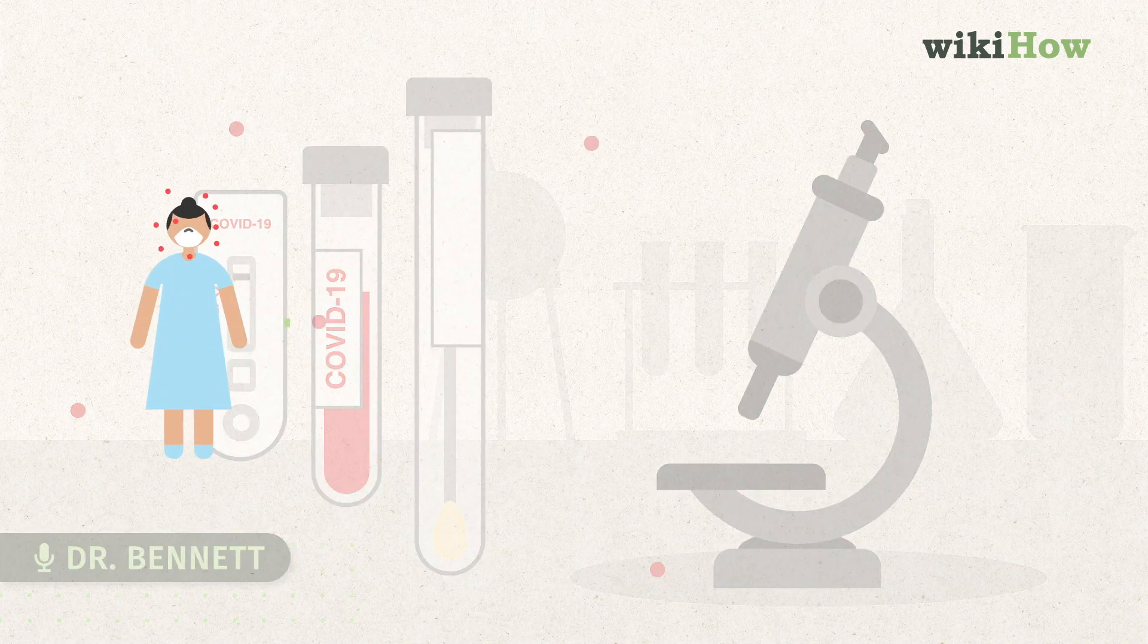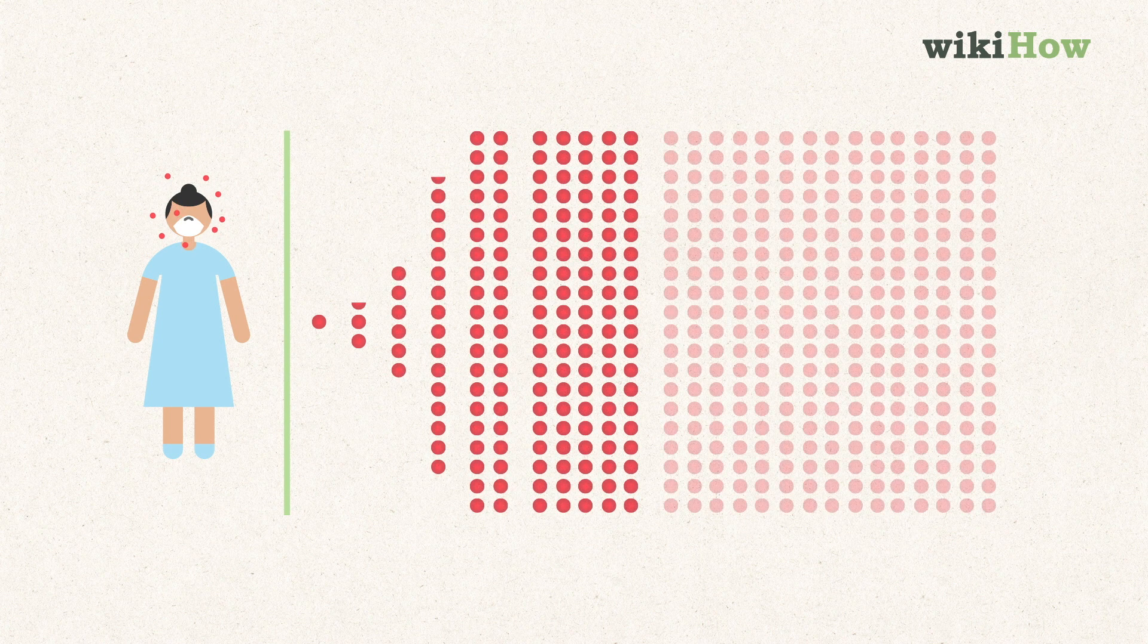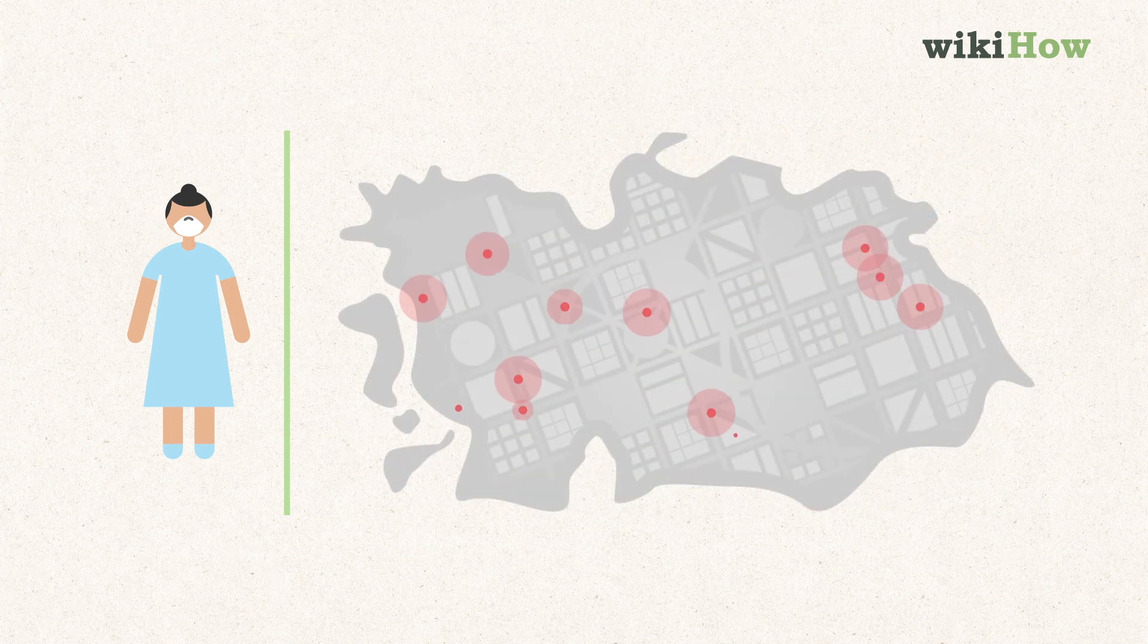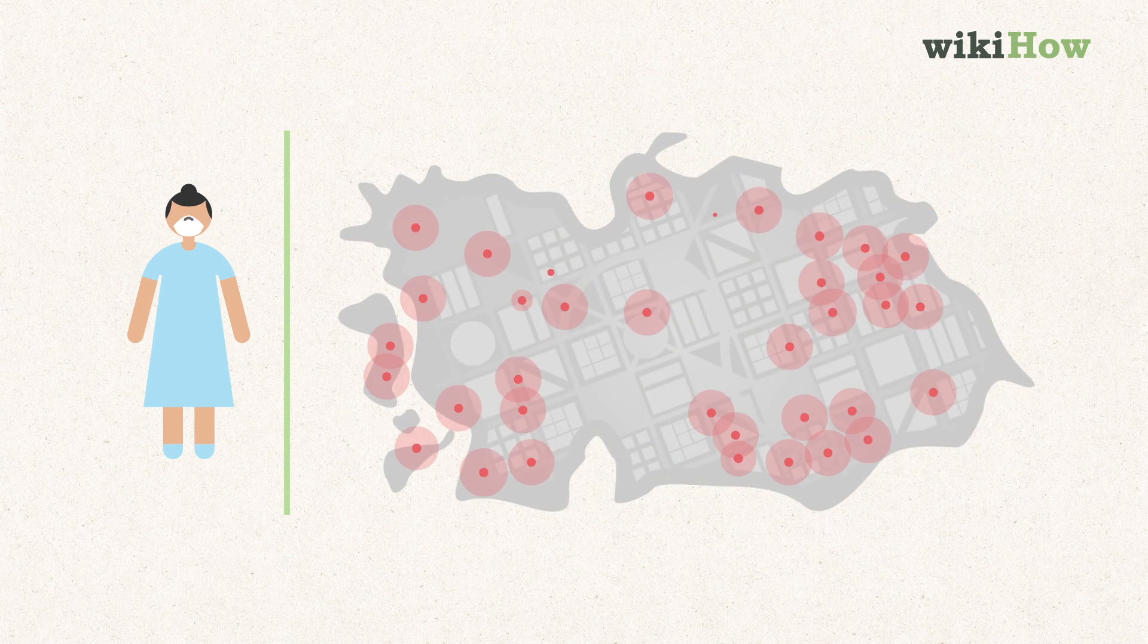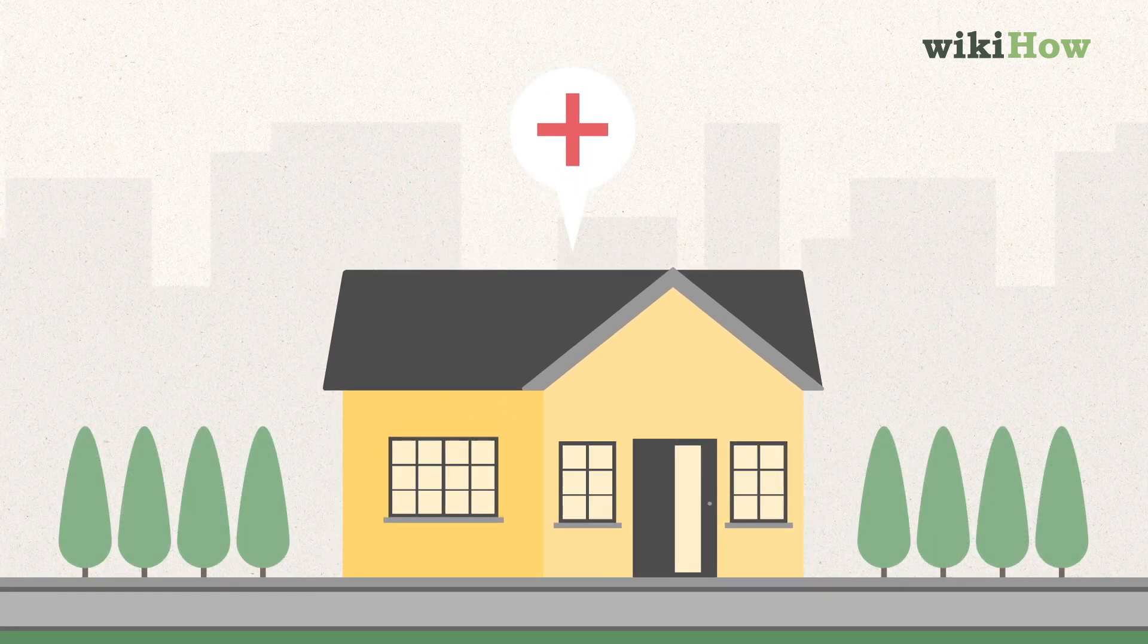As we begin to understand the true size of the number of infected people in our communities through antibody tests and virus tracer tests, we'll better be able to predict the trajectory of the virus and the amount of time we'll need to stay at home or remain socially distant.